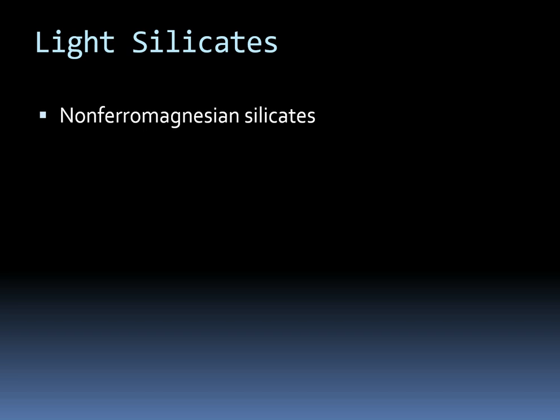The name non-ferromagnesian comes from 'ferro,' which is Latin for iron, and magnesium. Since it says 'non,' that means they don't have iron and magnesium. We've talked before about how those elements tend to make minerals really dark in color, so if they don't have them, they're going to be lighter — which is why these are called the light silicates.